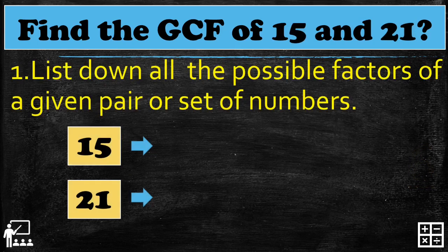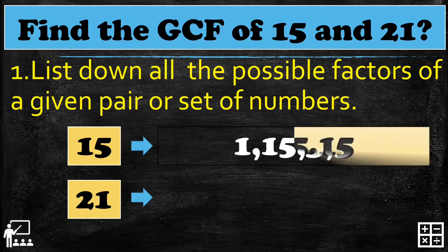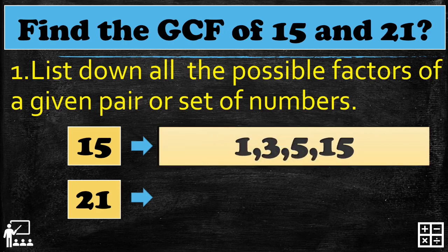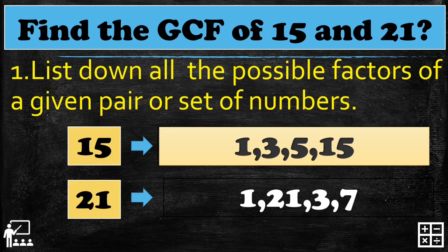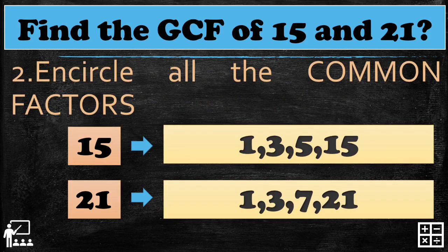Let's try another. Find the GCF of 15 and 21. First, list down all the possible factors of 15: 1, 3, 5, and 15. And the possible factors of 21 are 1, 3, 7, and 21. Step 2: encircle all the common factors.